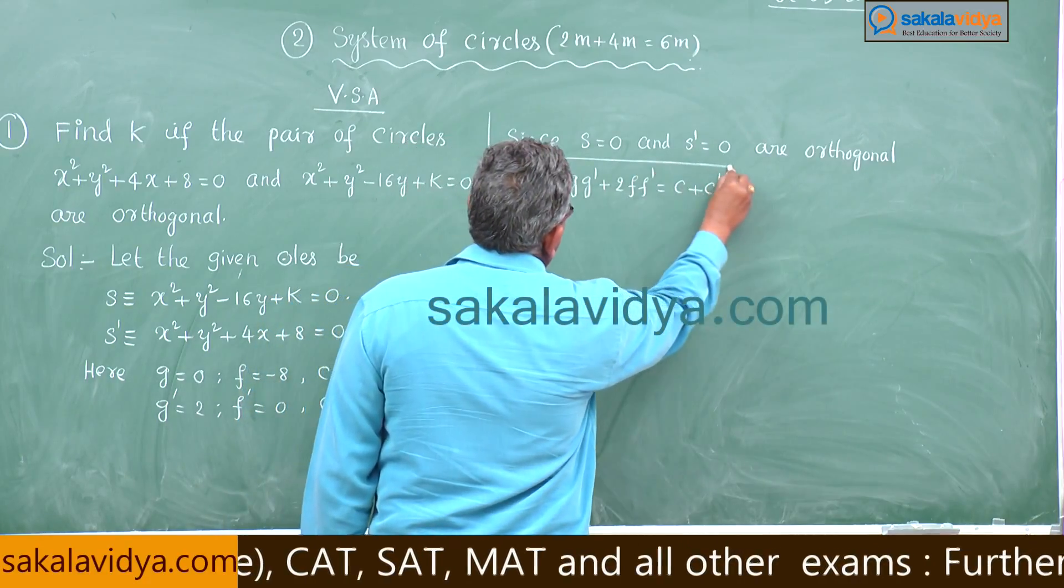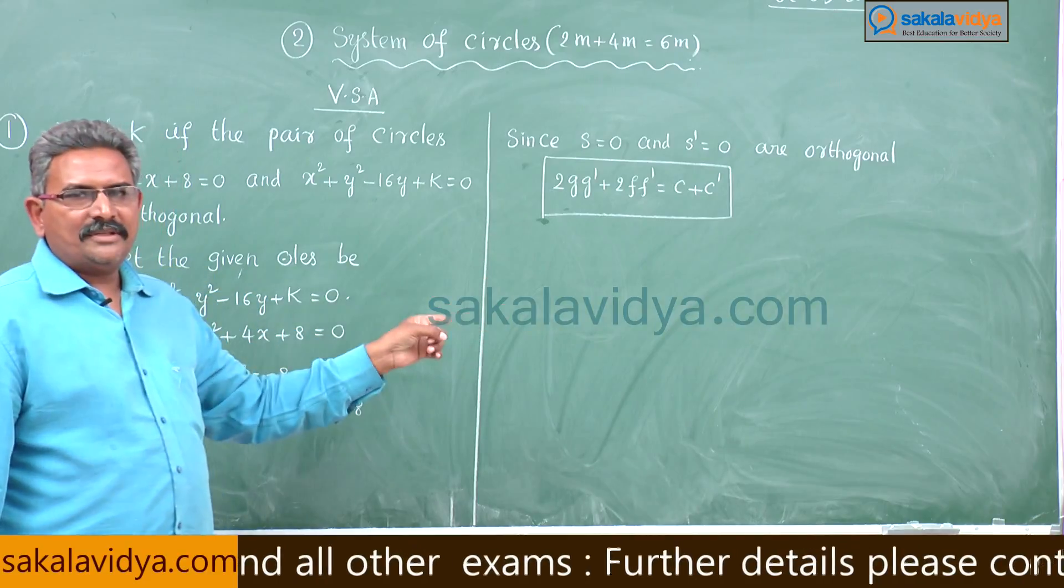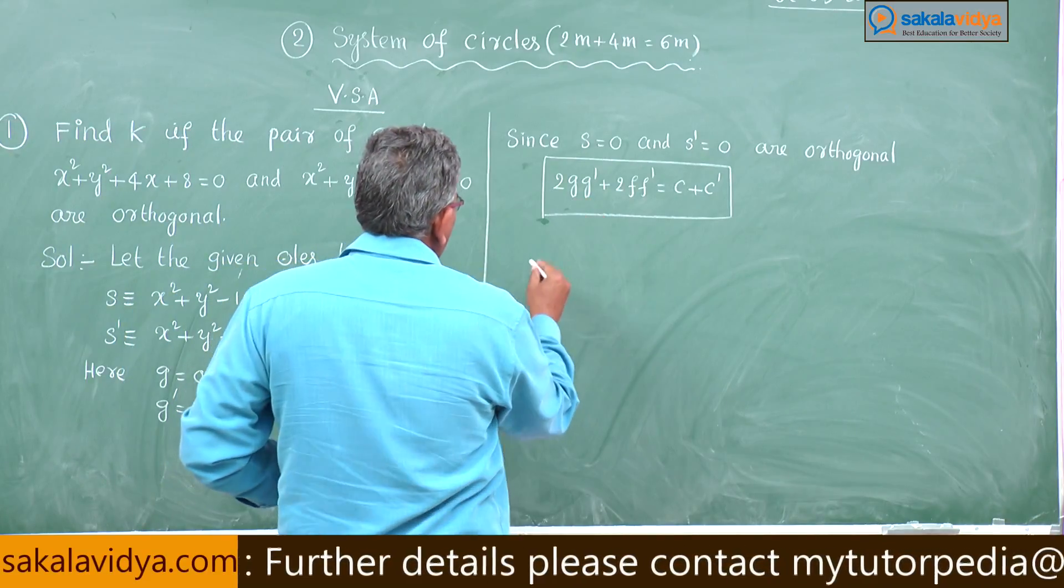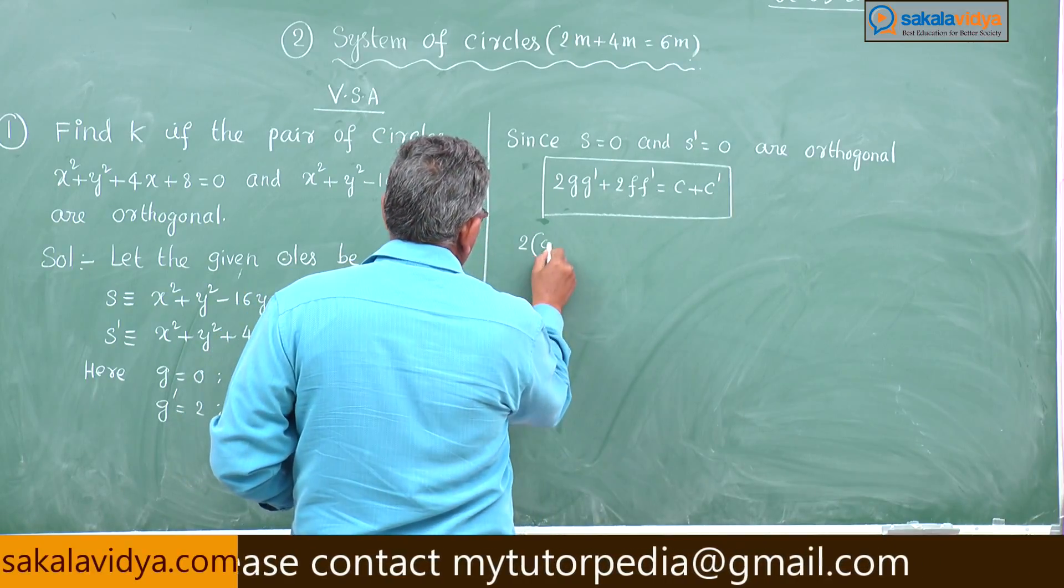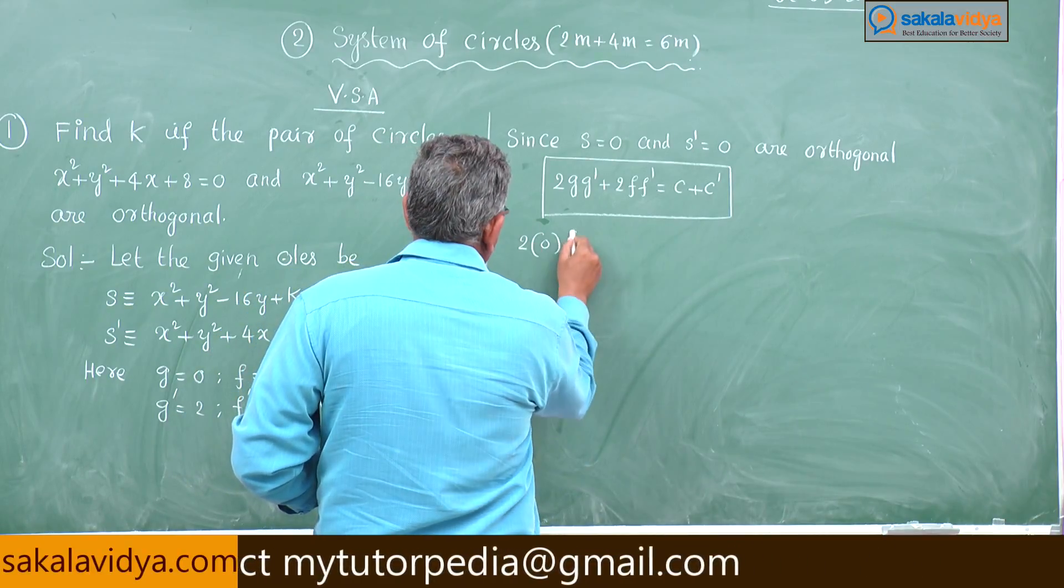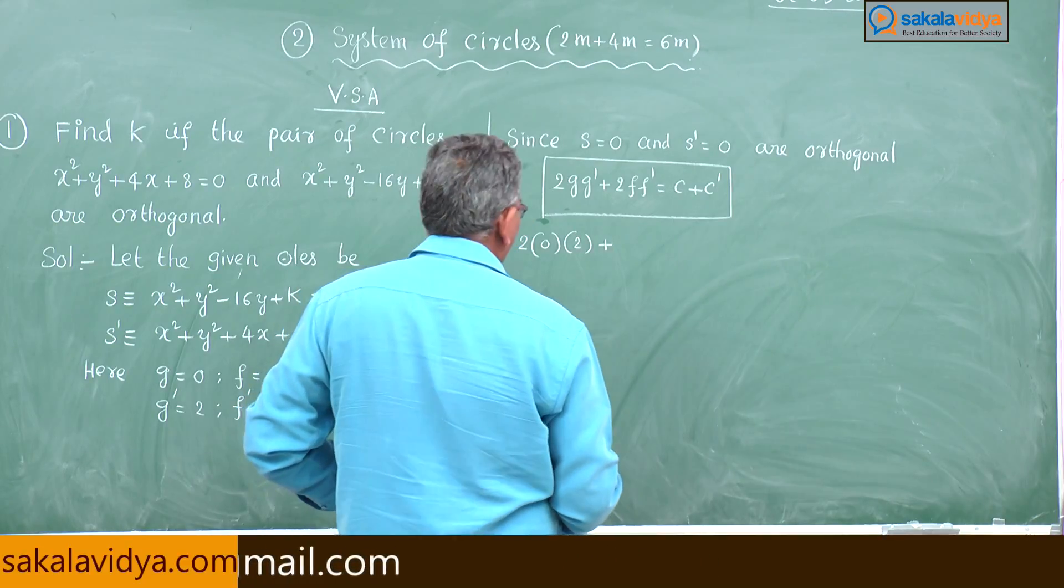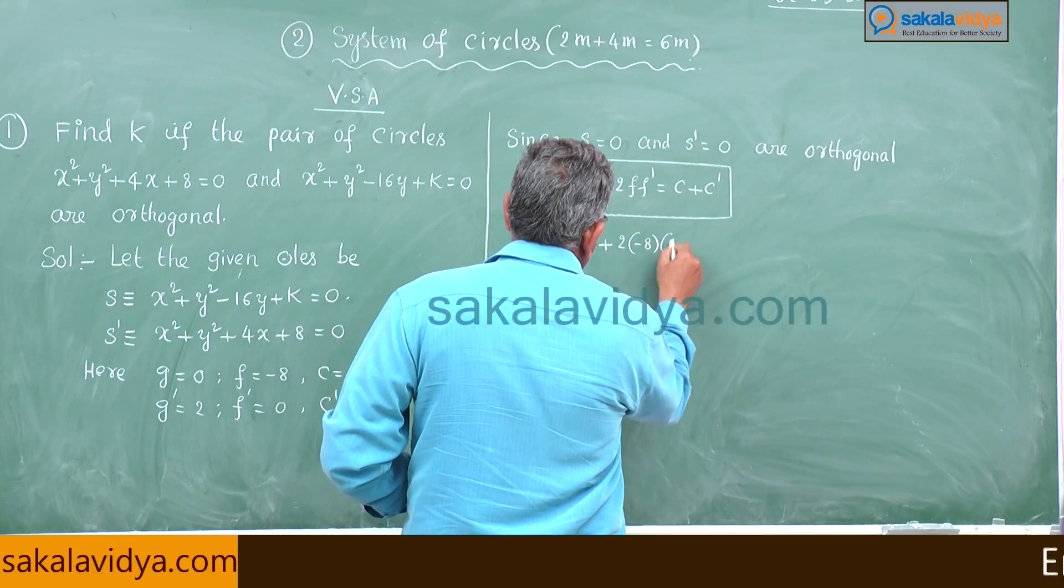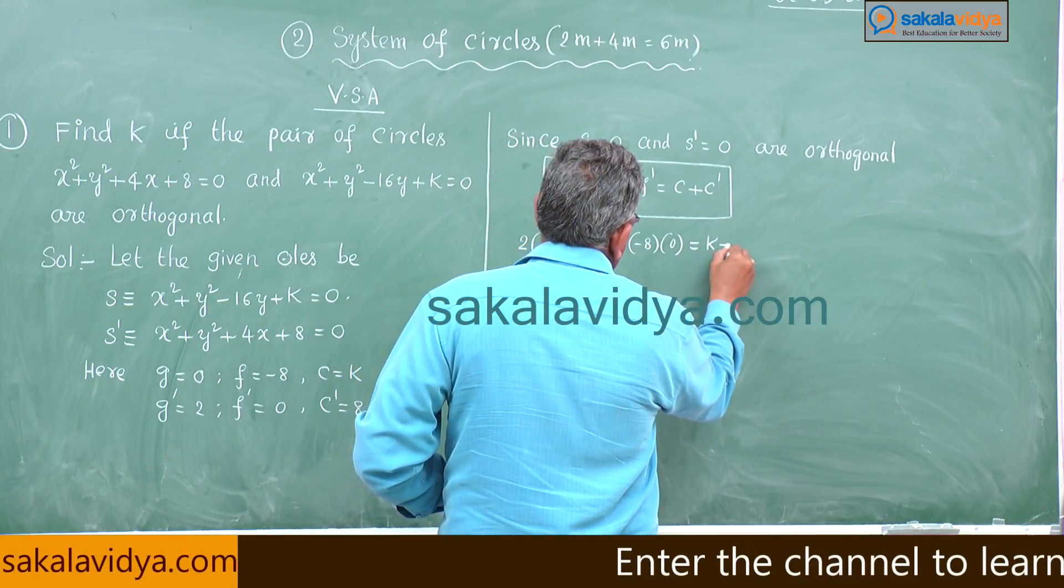You have to remember this one as a formula. This box item is very, very important. So, let us substitute: 2 × g × g' = 2 × 0 × 2, plus 2 × f × f' = 2 × (-8) × 0, equals c + c' = k + 8.